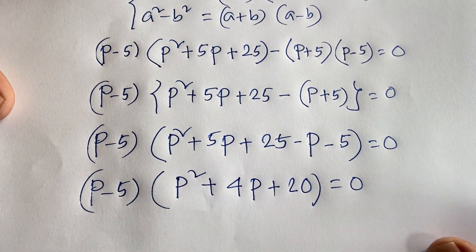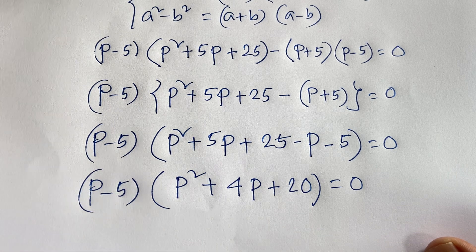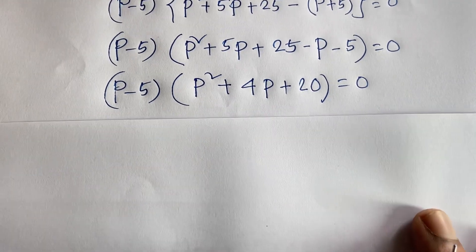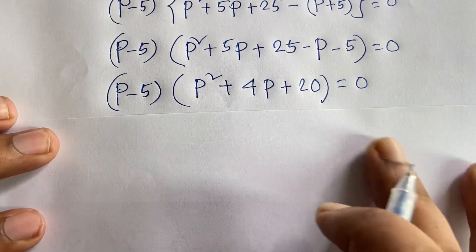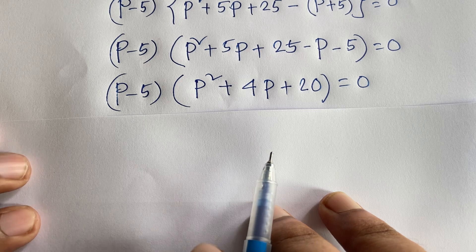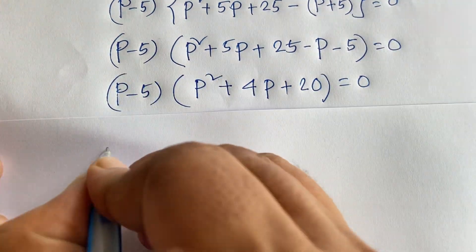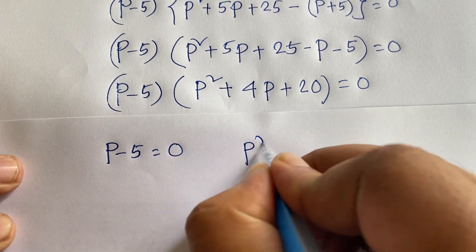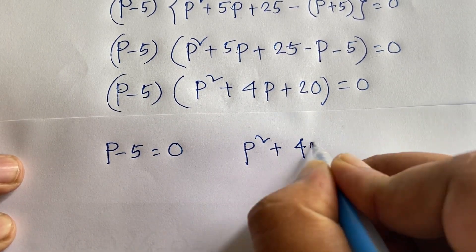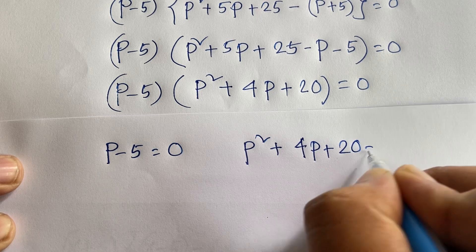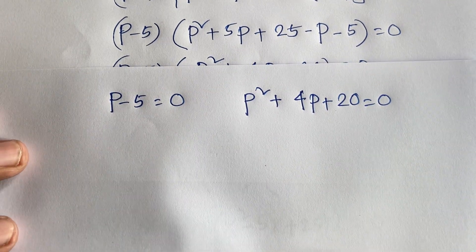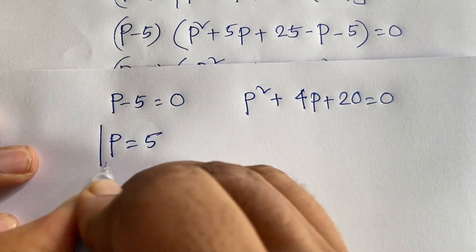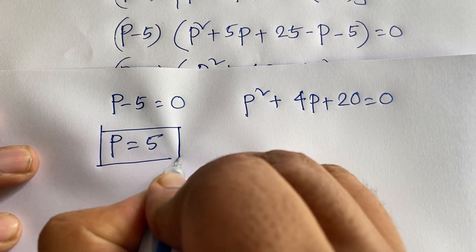So we are finding two expressions. Our first case is P minus 5 equals 0, and in the other case, we are finding P squared plus 4P plus 20 equals 0. From the first case, P minus 5 equals 0, so we find our answer P equals 5.